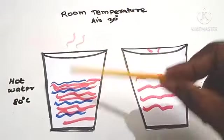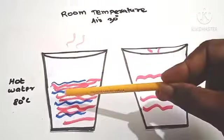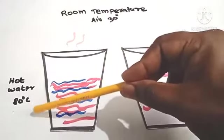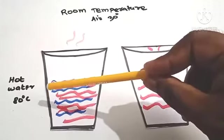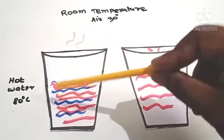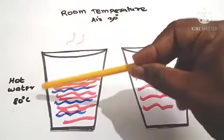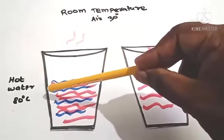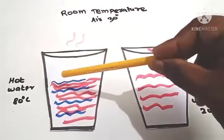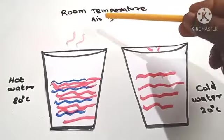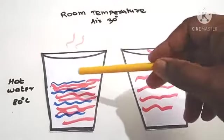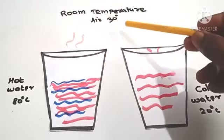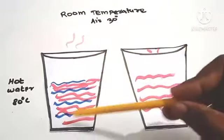Consider system A and system B. System B is at 80 degrees Celsius, and system A is at a lower temperature. Heat is transferred from the hotter body to the colder body. The hot water is the hotter body, transferring heat to the air. The air reaches 50 degrees Celsius.